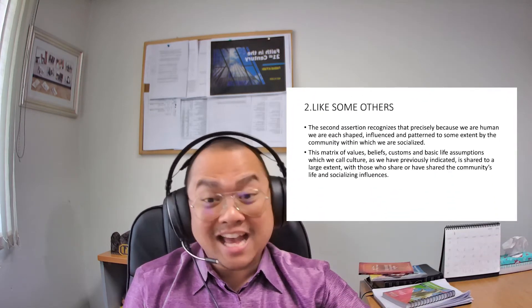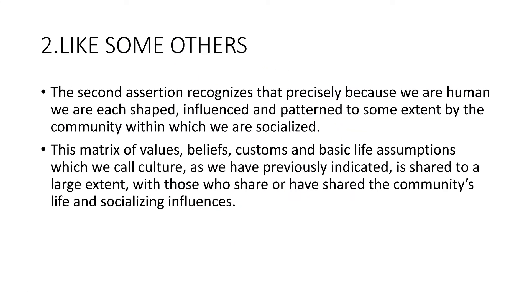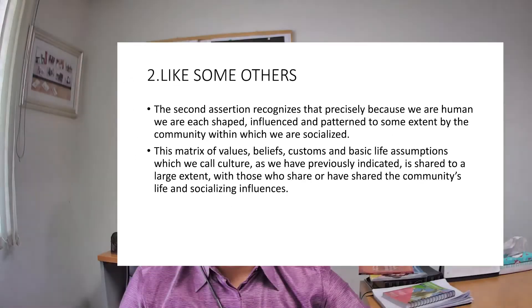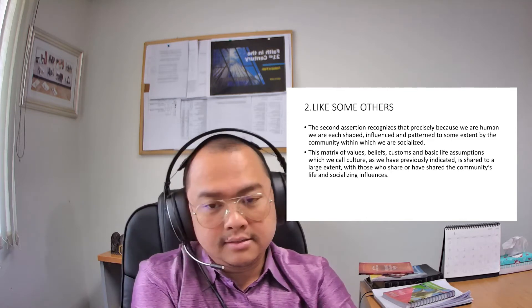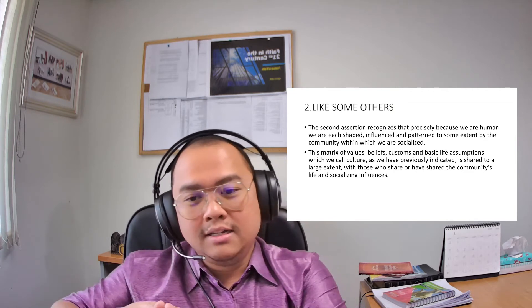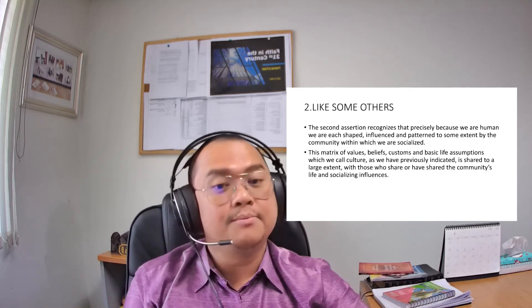The next one is: we are like some others. The second assertion recognizes that precisely because we are human, we are each shaped, influenced, and patterned to some extent by the community within which we are socialized. This matrix of values, beliefs, customs, and basic life assumptions — which we call culture, as we have previously indicated — is shared to a large extent with those who share or have shared the community's life and socializing influences. So every human being is like some others, and these categories of 'like some others' are the categories of cultures, because we are like a certain group of people in terms of shared beliefs, customs, values, and basic life assumptions.